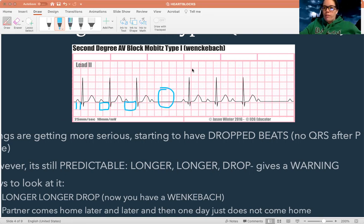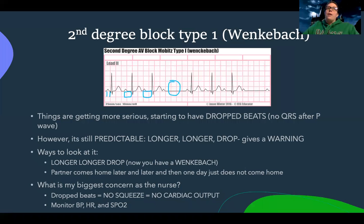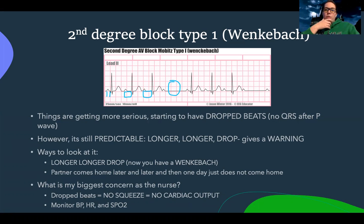Going back to the relationship analogy — the partner is maybe working too much, now they're coming home later and later. It used to be predictable. They were coming home at the same late time every night. Now the partner's coming home later and later: first working until 10, then until 12, then until 2, and then some nights they're just not coming home. That's what this rhythm is — longer, longer, drop: Wenckebach. My biggest concern is that when I'm dropping those beats, I'm getting no squeeze, no contraction, no blood flow out to the body. So I need to monitor blood pressure, heart rate, and oxygen levels closely.